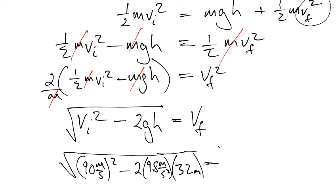Let's get our trusty RPN calculator. And we're going to go 90 squared enter, 9.8 times 32 times, and we're going to subtract that. And then we're going to take the square root.